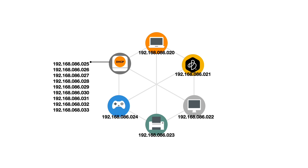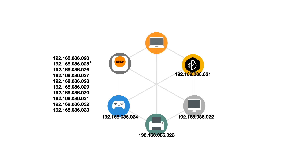Unfortunately the problem with a DHCP server is that because the IP address that it issues will be dynamic, if a device leaves our network or our DHCP server reboots, there is a chance that the various devices on our network will no longer receive the same IP addresses that they previously used.